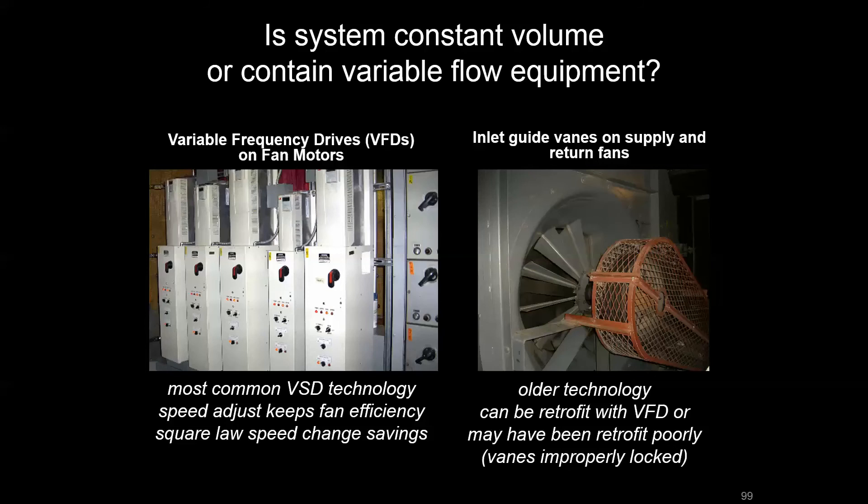Is the system constant volume or variable volume? The equipment or configuration that accomplishes variable volume is typically variable frequency drives — VFDs on the fan motors — intercepting the power signal and sending out a modulating signal to maintain something like duct static pressure. You can also have older technology like inlet guide vanes that modulate the blade pitch to accomplish a different pressure drop and affect flow. This is an older technology, and many times we would retrofit it with VFDs, but there's a specific blade pitch to lock it at and the way it's locked can sometimes be done poorly, so be on the lookout for that.